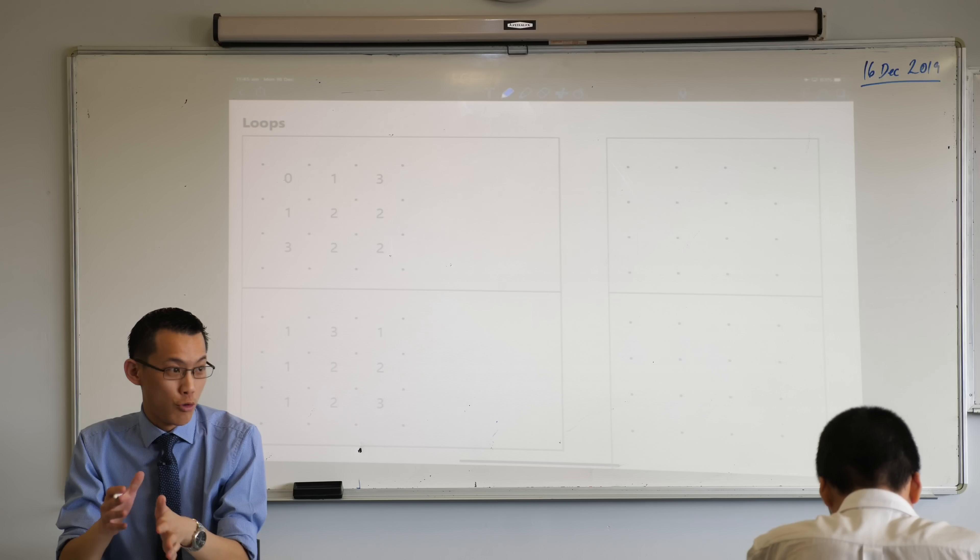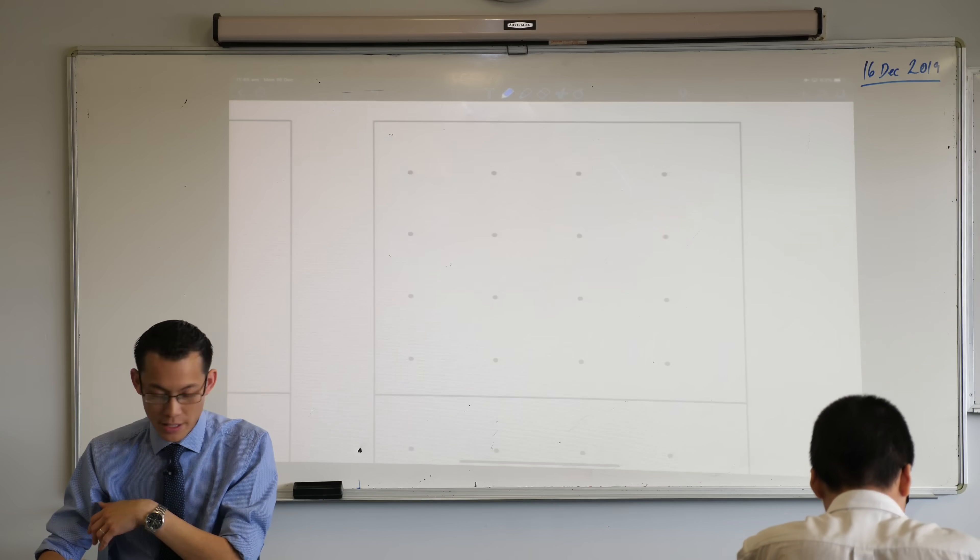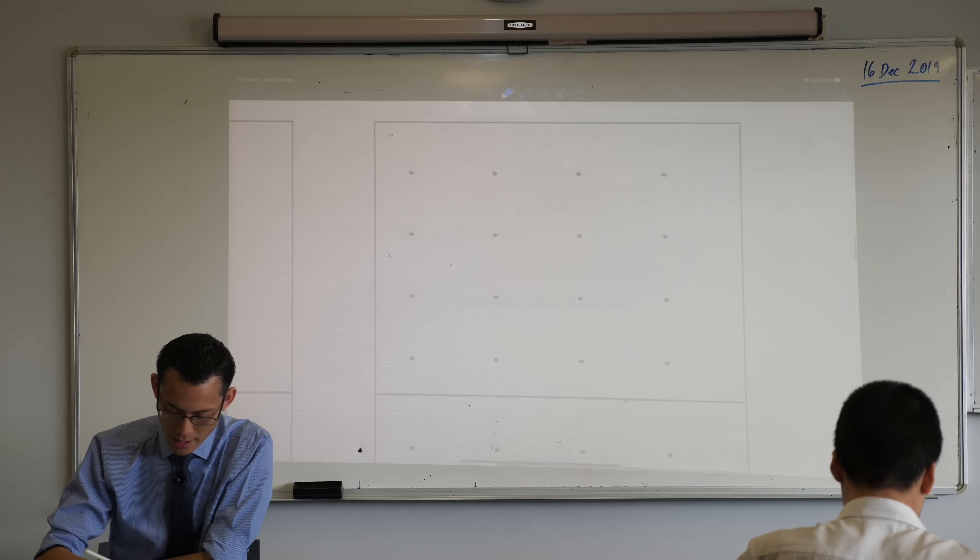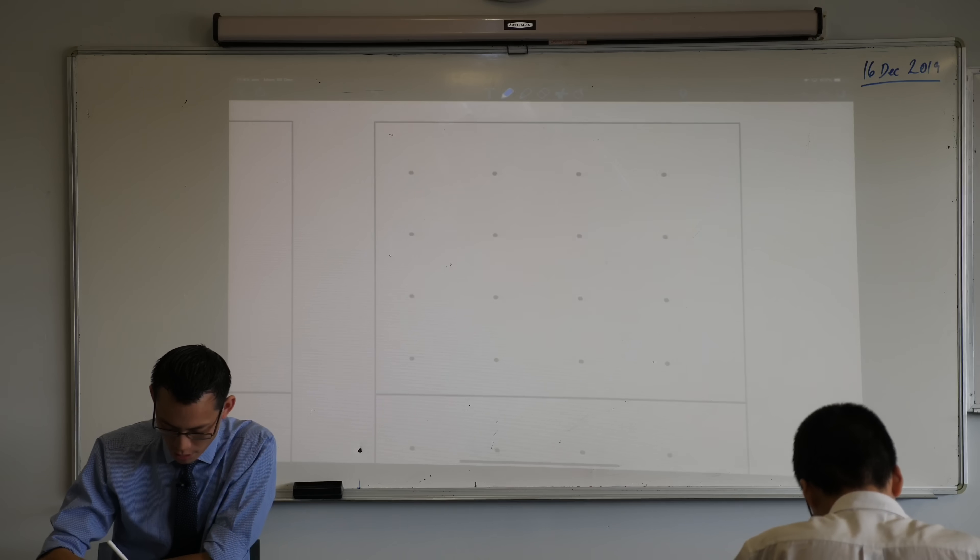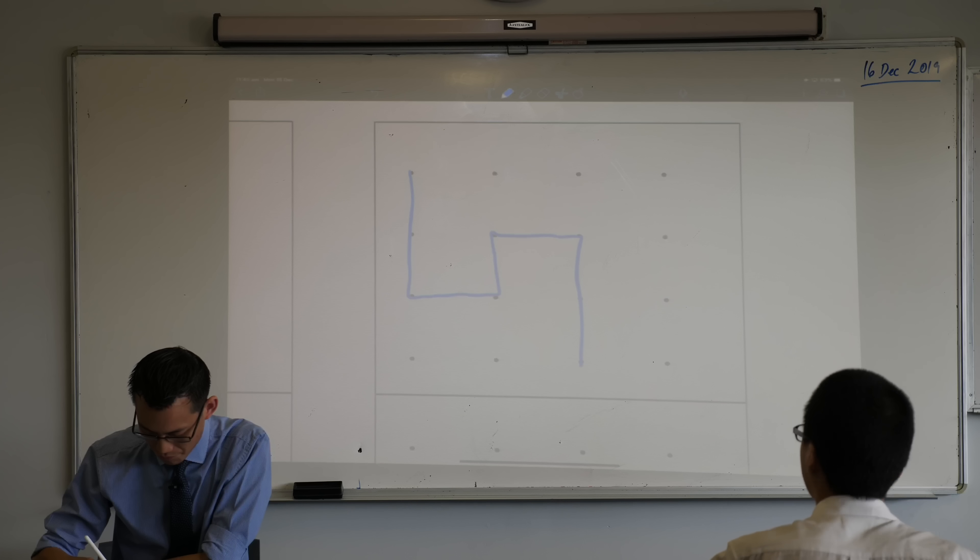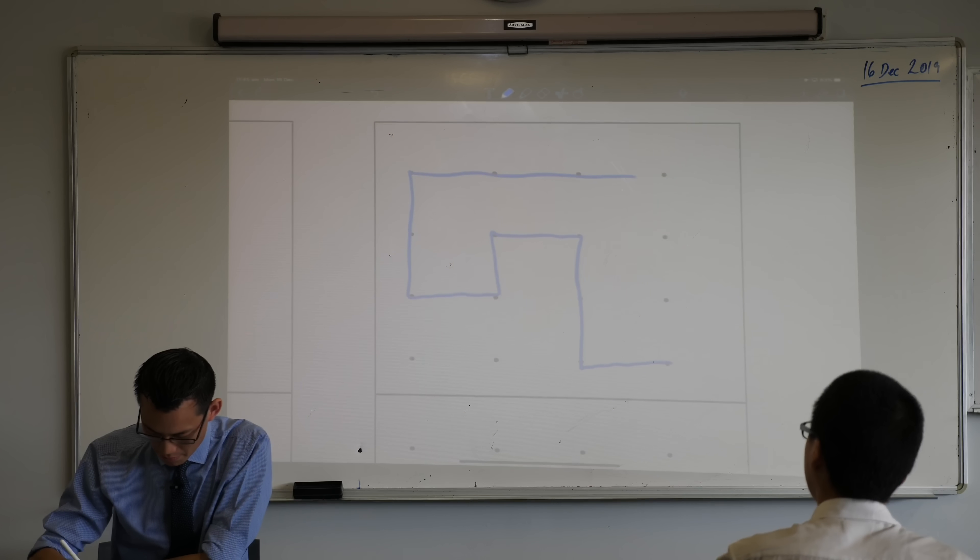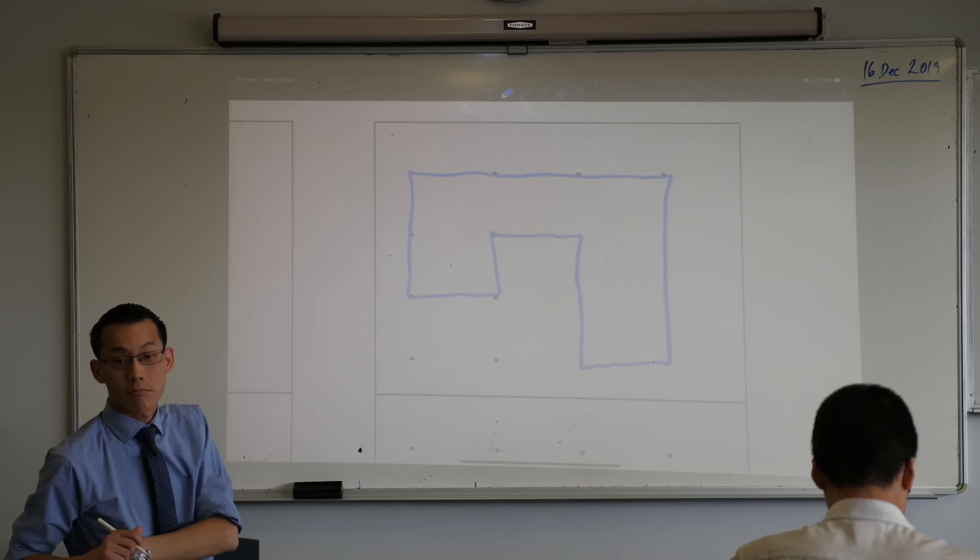Let me show you what a loop looks like. You don't need to draw this, I just want to show you what it will mean. A loop is, well let's just make one up, let's do something like this. Can you see that? Is that visible?